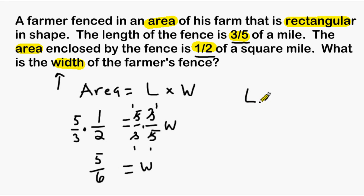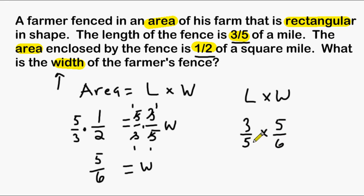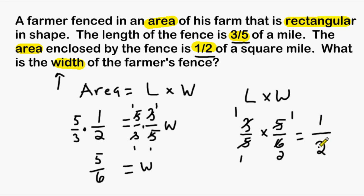To check our answer, we multiply the length times the width to see if we get an area of one-half. The length was three-fifths and the width we found was five-sixths of a mile. We can cancel out the fives and reduce three over six to one-half. The product of the numerators is one and the product of the denominators is two, confirming that three-fifths of a mile multiplied by five-sixths of a mile equals one-half of a square mile.